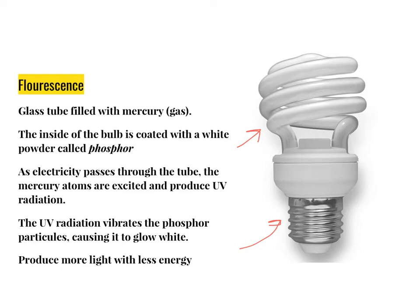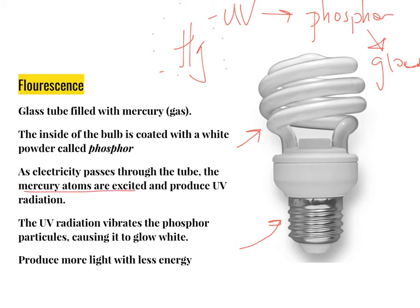As electricity passes through, what happens is basically the mercury atoms get excited and produce UV radiation. That UV radiation then causes the phosphor to get excited and to glow. And when it glows, it produces light. So the key points here is that it's the electricity passing through, the mercury atoms are excited and produce UV radiation, and that radiation vibrates the phosphor particles causing it to glow white.